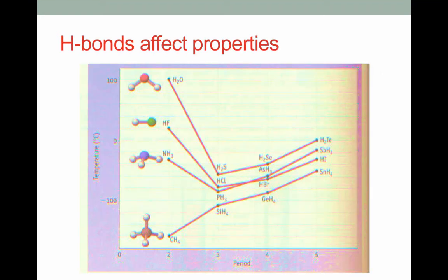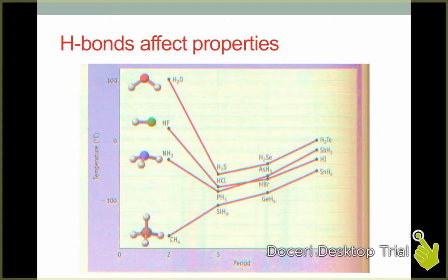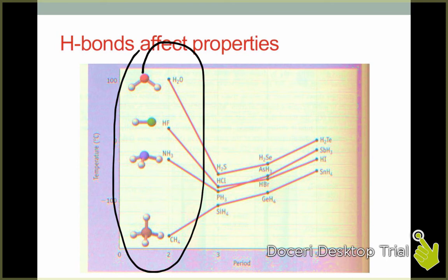As you might predict, hydrogen bonds also affect properties. Here we're looking at a graph of boiling temperature versus period on the periodic table for a number of different substances. Pay specific attention to compounds combining hydrogen with different elements: at the top we have H2O, then HF, then NH3, then CH4. Notice the sharp difference between the boiling points of H2O, HF, and NH3 compared to CH4.